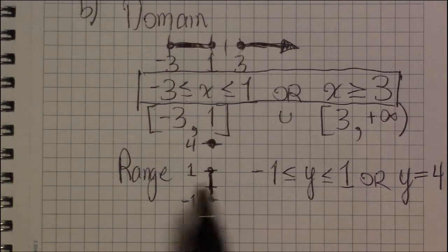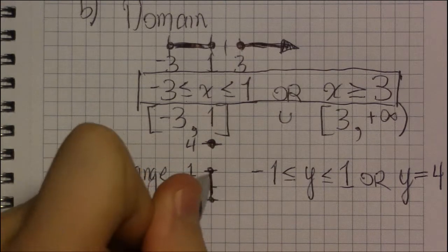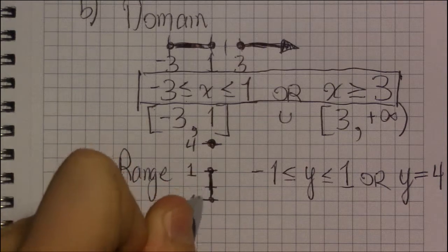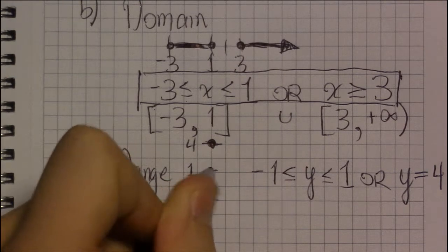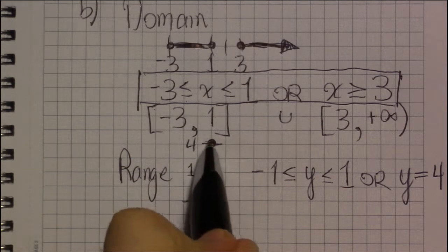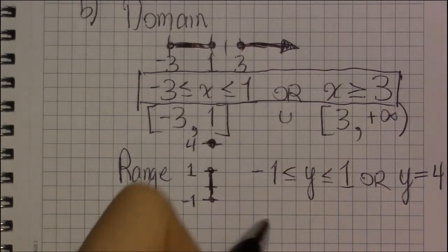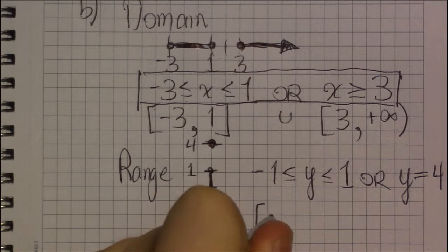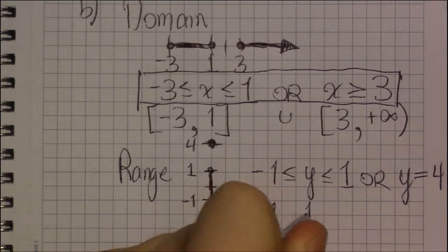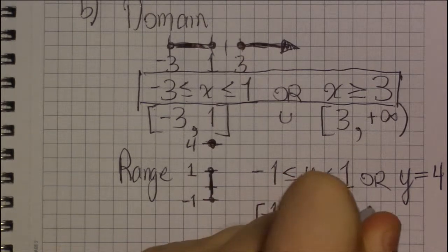In other words, you can find the graph, you can find bits of the graph on the y-axis anywhere from minus 1 to 1. Or, you can find bits of the graph at y equals 4. And, in interval notation, this is as follows.